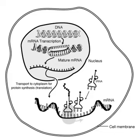This whole complex of processes is carried out by the ribosome, formed of two main chains of RNA called ribosomal RNA and more than 50 different proteins. The ribosome latches onto the end of an mRNA molecule and moves along it, capturing loaded tRNA molecules and joining together their amino acids to form a new protein chain. Protein biosynthesis, although very similar, is different for prokaryotes and eukaryotes.